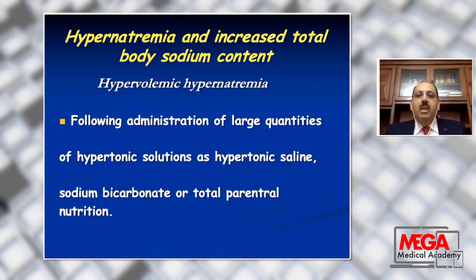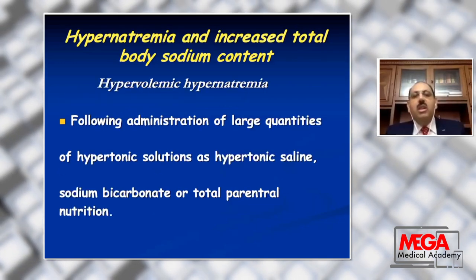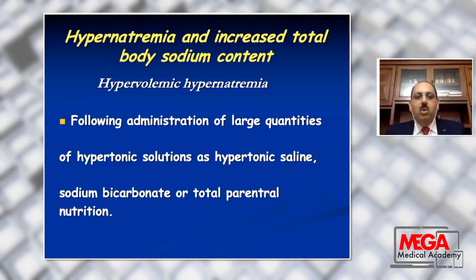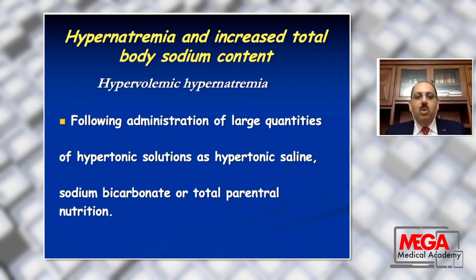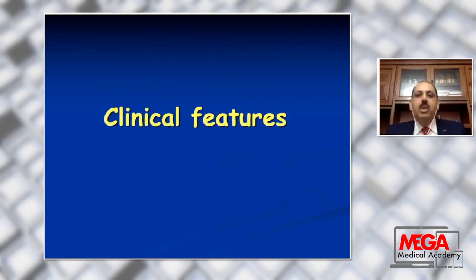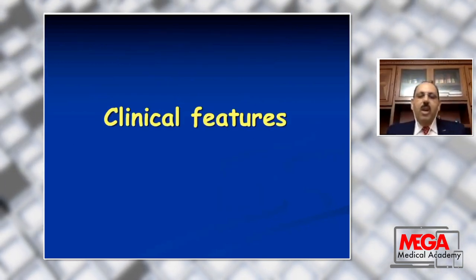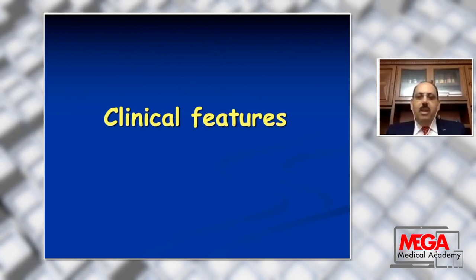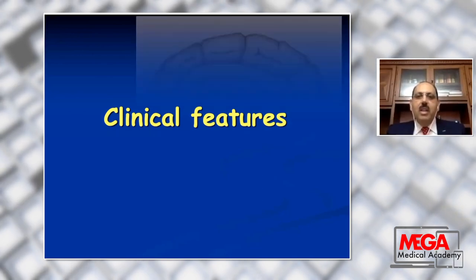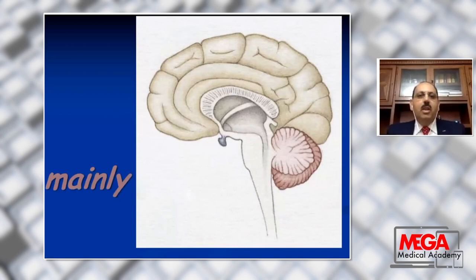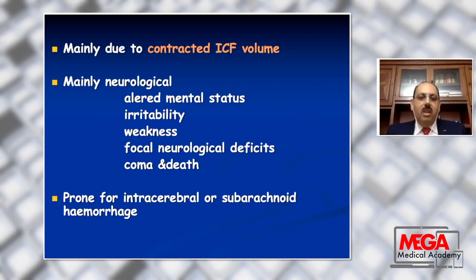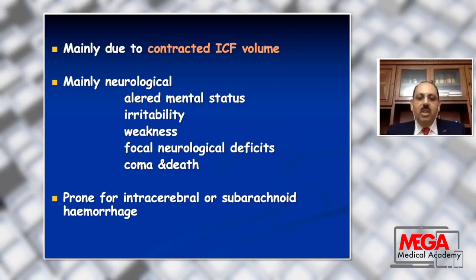Hypervolemic hypernatremia with increased total body sodium content is usually iatrogenic, due to administration of large quantities of hypertonic solutions such as hypertonic saline, sodium bicarbonate, or total parenteral nutrition. The clinical features — think about the brain — there is contracted intracellular volume and cell shrinkage, resulting in mainly neurological manifestation: altered mental status, irritability, weakness, focal neurological deficit, and coma.